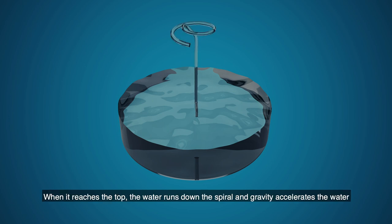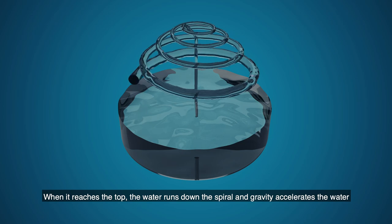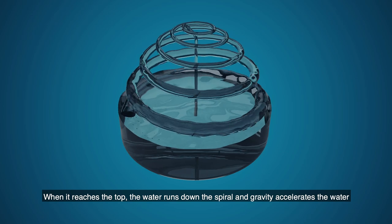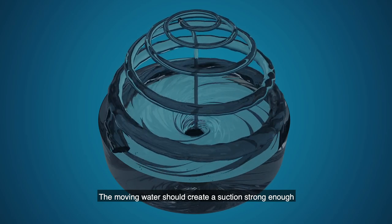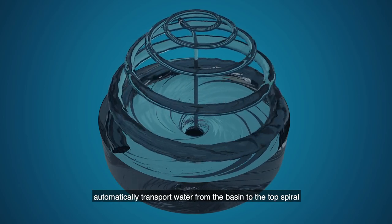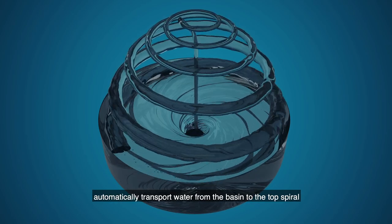When it reaches the top, the water runs down the spiral and gravity accelerates the water. The moving water should create a suction strong enough to automatically transport water from the basin to the top spiral.